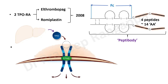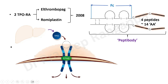Naturally in our body, thrombopoietin is produced by the liver and acts on the thrombopoietin receptor present on megakaryocytes. When thrombopoietin acts on this receptor on the megakaryocytes, certain signaling pathways get activated which lead to the production of platelets. This is the natural process.